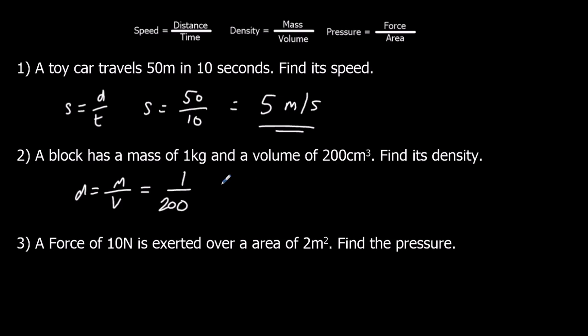So we've got a density, we can leave it as a fraction, we can leave it as 1 over 200, that's absolutely fine. A density of 1 over 200, and its mass over volume, so kilograms per centimeter cubed.